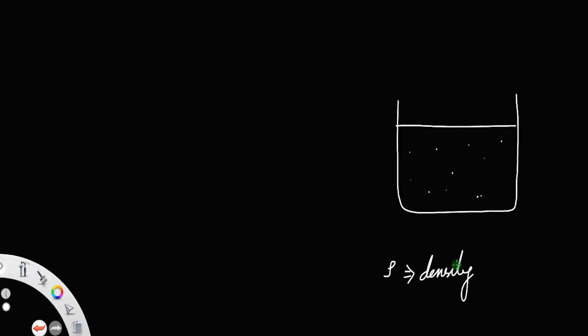This is the surface of the liquid. Above that, there is air or the atmosphere. Consider a liquid column such that its top face is on the surface and the bottom face is at a depth h. Let this length be h.